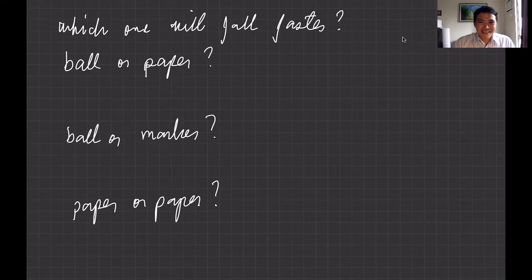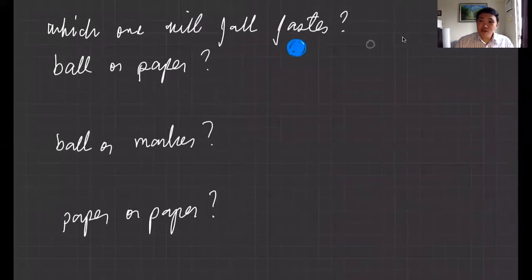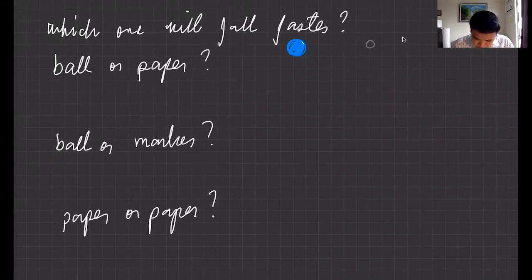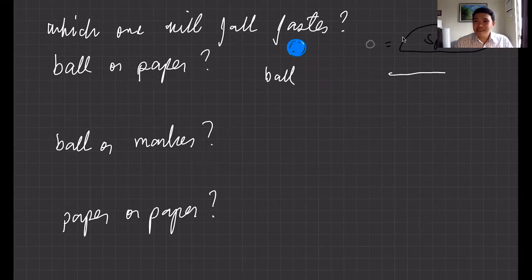Let's change the screen. So in planet Earth the ball falls faster, but in the Moon or in a vacuum — where there is no air resistance, no atmosphere — it should be the same. In outer space, whether you have a ball or a paper, they will fall at the same time.